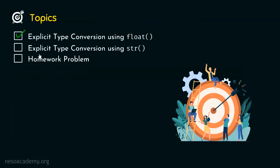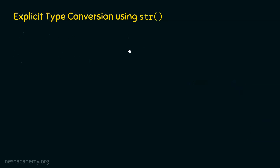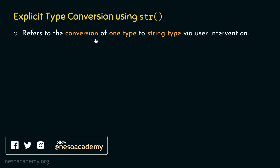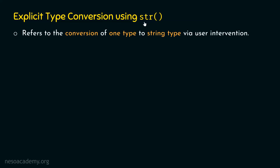Now let's move on to the next topic: Explicit Type Conversion using str. Explicit Type Conversion using str refers to the conversion of one type to string type via user intervention. As the name suggests, str is short for string. The str method is capable of converting one type of object to a string type object. The syntax is the same — we use str and provide the value we want to convert within parentheses.